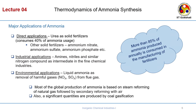Let us see the applications of ammonia. Ammonia is a raw material for solid fertilizers, consuming 40% of ammonia usage. The solid fertilizers include NPK (nitrogen-phosphorus-potassium) fertilizers: ammonium nitrate, ammonium sulphate, and ammonium phosphate. A famous fertilizer trade name is DAP — diammonium phosphate — regularly given to plants and manufactured from ammonia as feedstock. There are also industrial applications: amines, nitriles, and certain nitrogen compounds are intermediates used in fine chemical industries. An important environmental application is that liquid ammonia can be used for removal of harmful gases such as NOx and SOx by counter-current scrubbing.